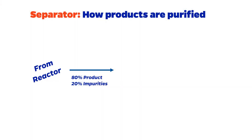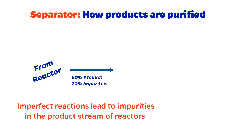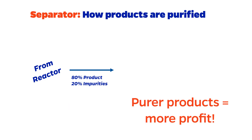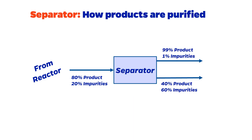Much to our dismay as chemical engineers, reactions are not perfect or ideal. Conversions are rarely 100%, and side reactions are likely in real life. As a result, the product stream from a chemical reactor is unlikely to be pure. Since we can generally sell purer products for a higher price, we might want to purify our products with a separator.